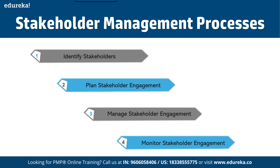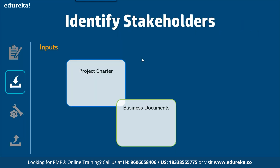Now we are going to talk about these steps one by one in detail. For identify stakeholders, we have three inputs. First is the project charter, which helps you identify the key stakeholder list. Next is the business document, which contains a business case and benefits management plan. The next one is the project management plan, which helps you have effective communication management and a stakeholder management plan.